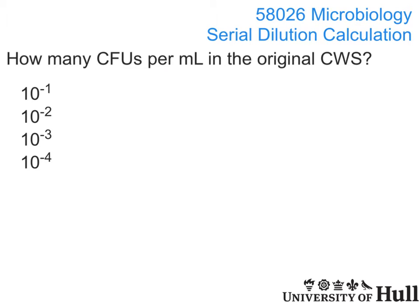Let's imagine the following. You've set up a serial dilution in the same way as you did in practical one, so you've got 10 to the minus 1 through 10 to the minus 4. You've looked at your spread plates. For these three, there are too many colonies to count, but for the 10 to the minus 4, you have 23 colonies on your plate — that's a good number to use. That came from pipetting 50 microlitres of that dilution onto the plate.